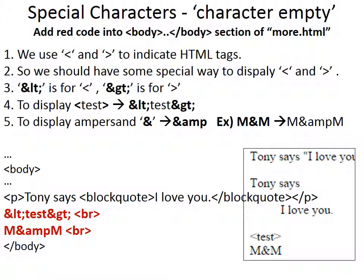There are some special characters, like character entities. Since we use less-than and greater-than signs to indicate tags, we should have another way to display them. So, &lt; is for the less-than sign and &gt; is for the greater-than sign. To display an ampersand, you type &amp;.